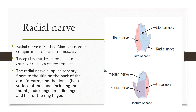The radial nerve has a root value of C5 to T1 — all the roots of the brachial plexus are involved in forming the radial nerve. It mainly innervates the posterior compartment muscles of the forearm.